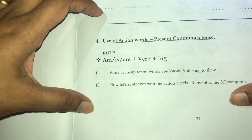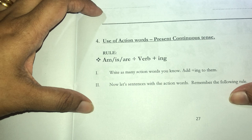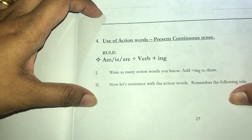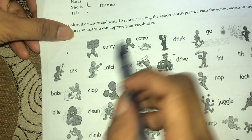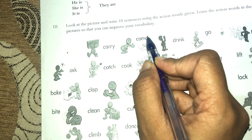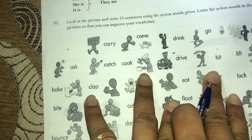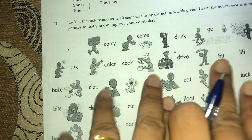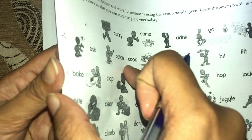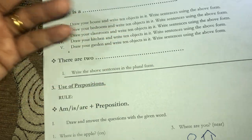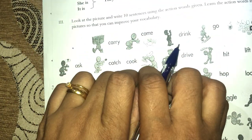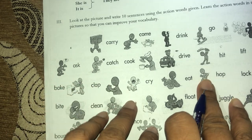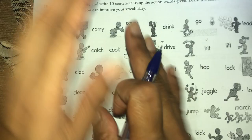For action words - present continuous tense - you can use it, but be careful to use it properly. Add '-ing' to action words: running, going, knitting. For words like 'carry' and 'come', you need to modify before adding '-ing.' If you are not sure about it, omit using action words for this grade and use other sentence structures instead. In the next preparatory grade you will have to use it, and I'll teach you then.